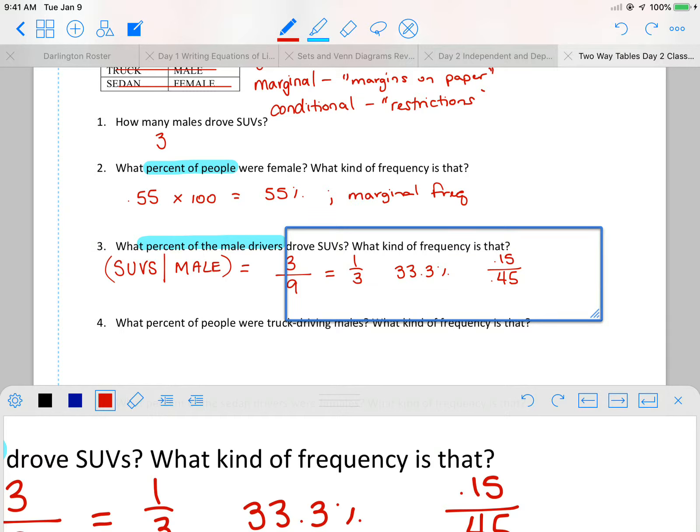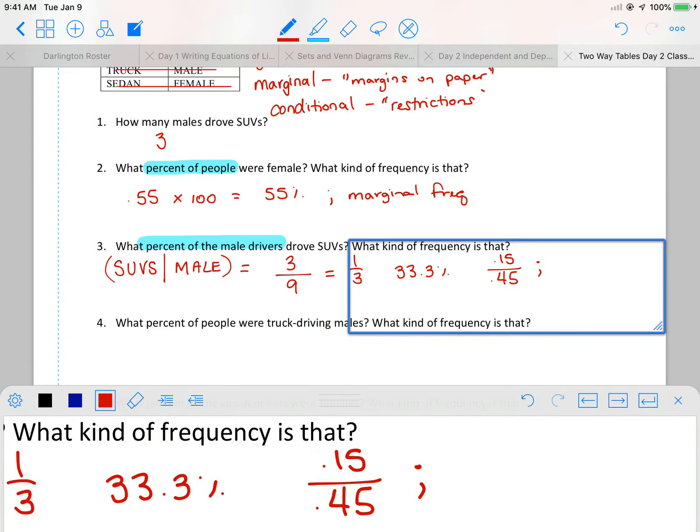Now, when you come to what kind of frequency, because my sample space was restricted, we weren't talking about all 20 people. Because they put a restriction on it, it is conditional.